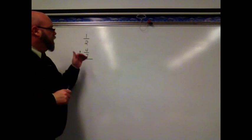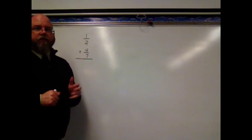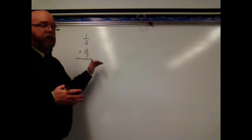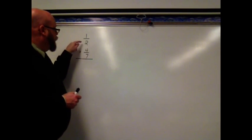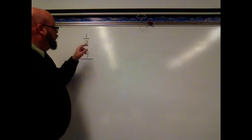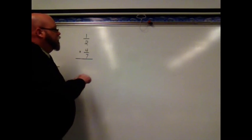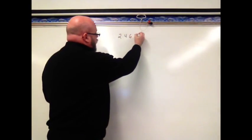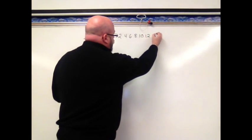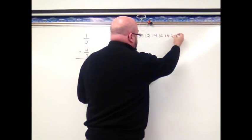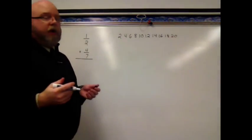I want to look at another problem. I've got 1 half plus 4 sevenths. Again, I'm going to have to use the least common multiple to find my common denominator so I can add these two, because I can't count by 2 and make it to 7 and I can't count by 7s and get to 2. So I'm going to go ahead and count by 2s. 2, 4, 6, 8, 10, 12, 14, 16, 18, and 20.